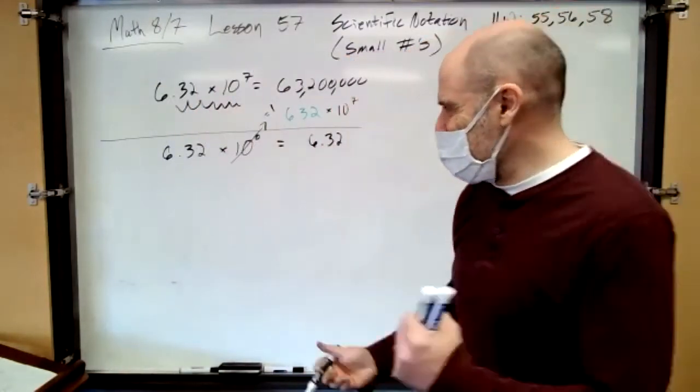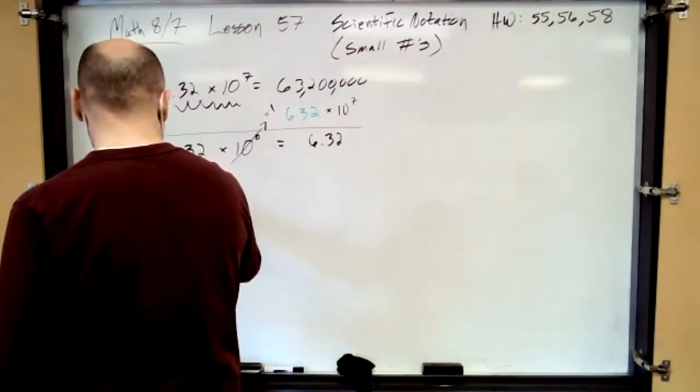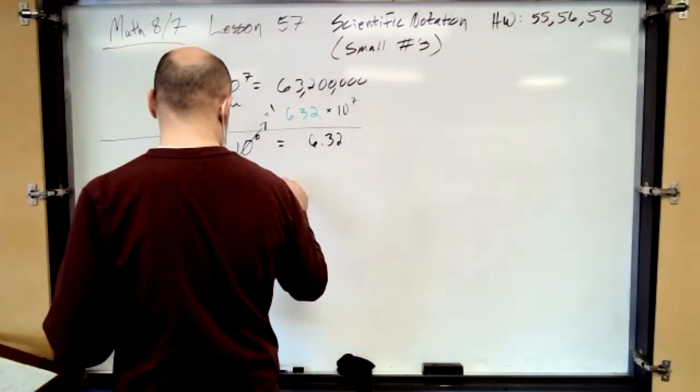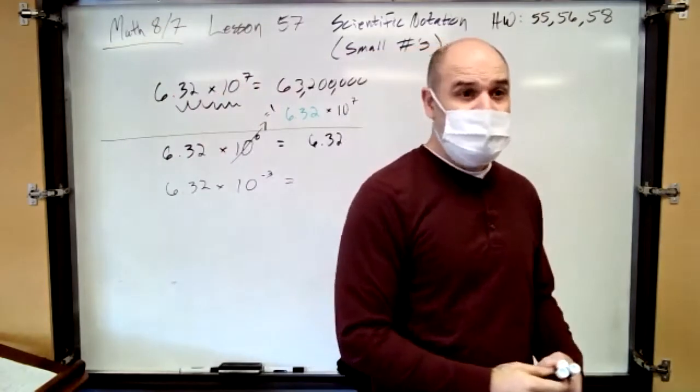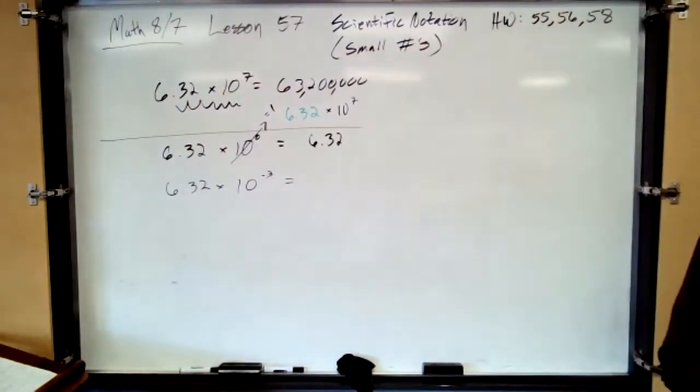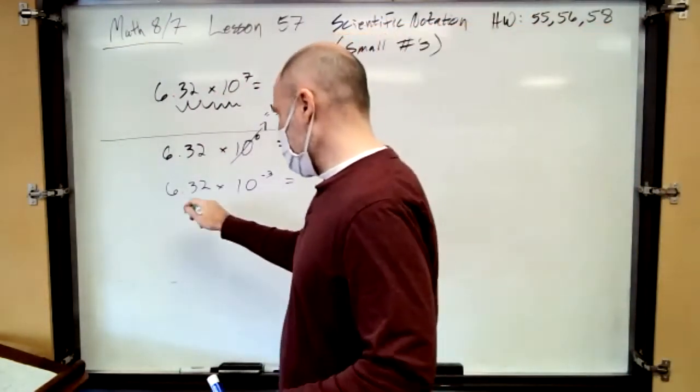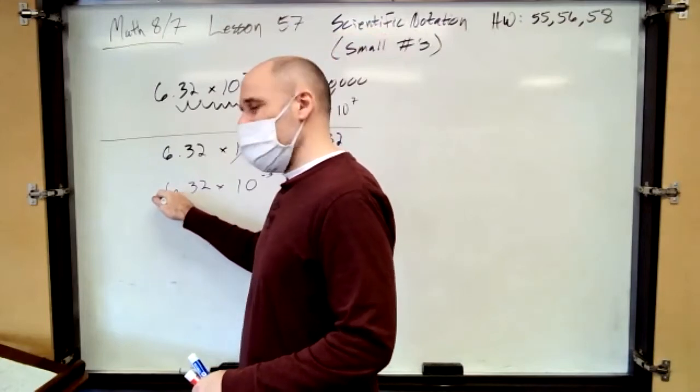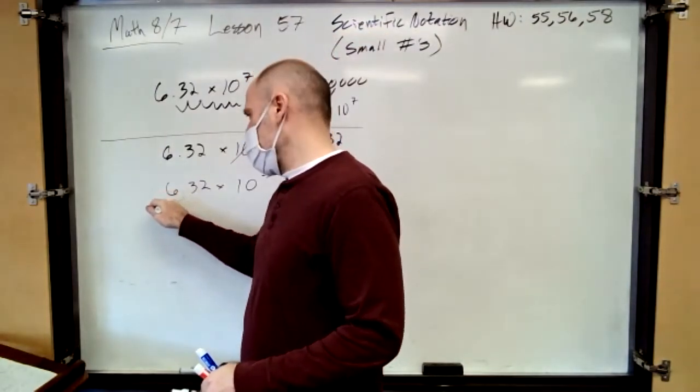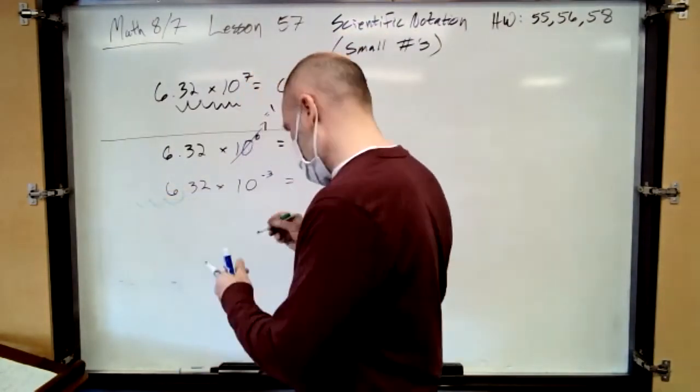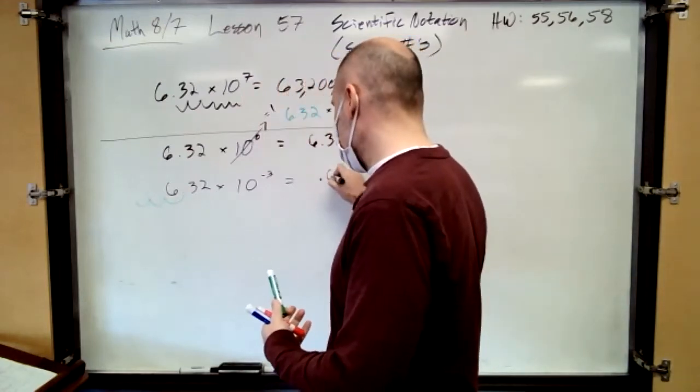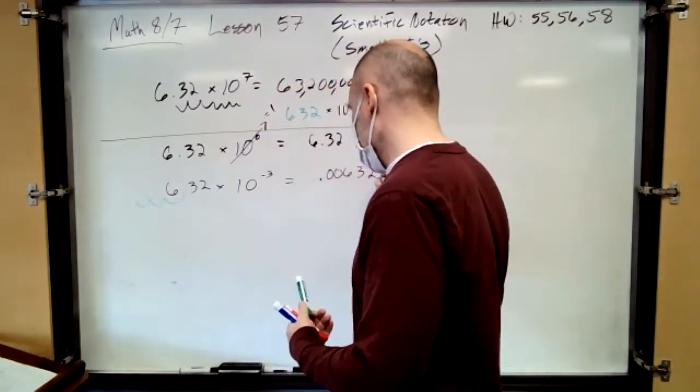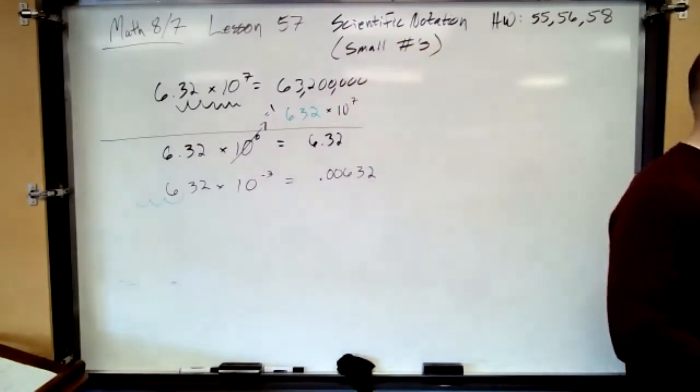What if you had negative numbers? So, if I had 6.32 times 10 to the negative third? Guess which direction you go, Adeline? Left. Yeah, you're going to go left three places. One. Uh-oh, you're out of digits. Zero. Add some zeros, so you end up with .00632.